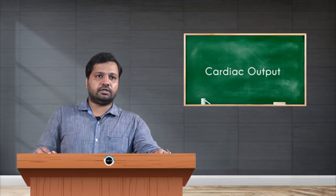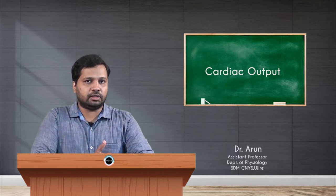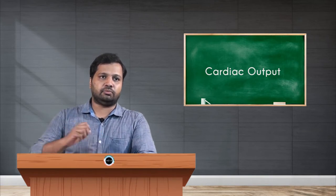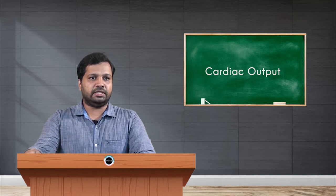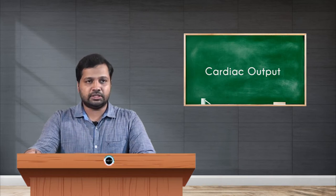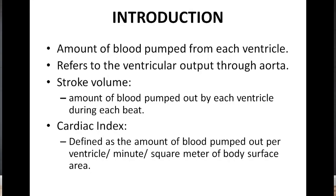Welcome to this session. We are going to discuss what is cardiac output, and what are the physiological and pathological variations of cardiac output. Cardiac output is mainly regulated by heart rate and stroke volume. The cardiac output is the amount of blood pumped from each ventricle — it refers to the ventricular output through the aorta.